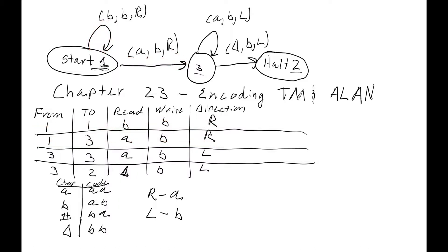Now we need to code it up. The 'from' state is a one, so we're going to let the number of A's match the state that we're in. Since we're from state one, we'll have just one A. If we're in state three, that would be three A's. Then we'll use the letter B as a little separator. Then we'll go ahead and encode the 'to' state. If we're going to state one, we use one A for that. If we're going to state three, we'd use three A's.